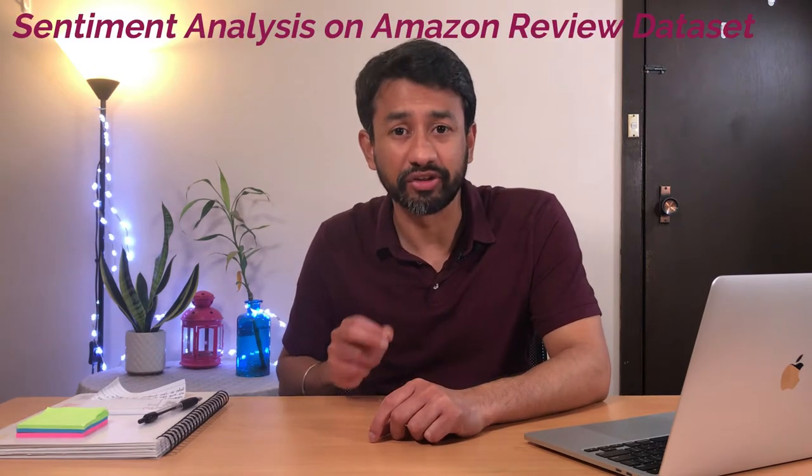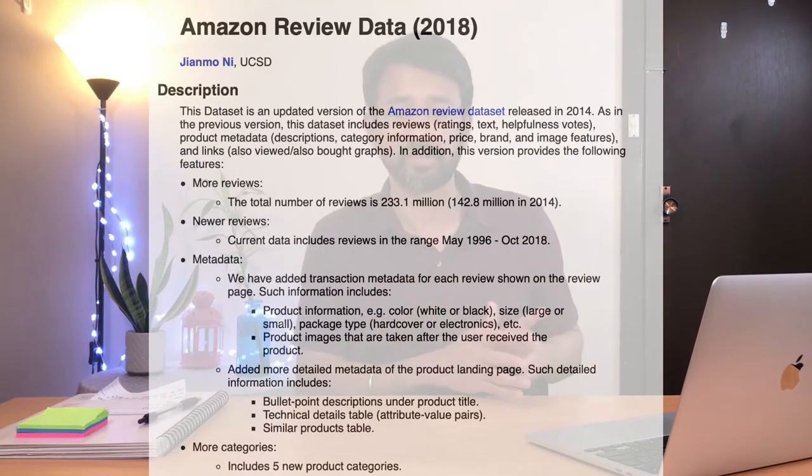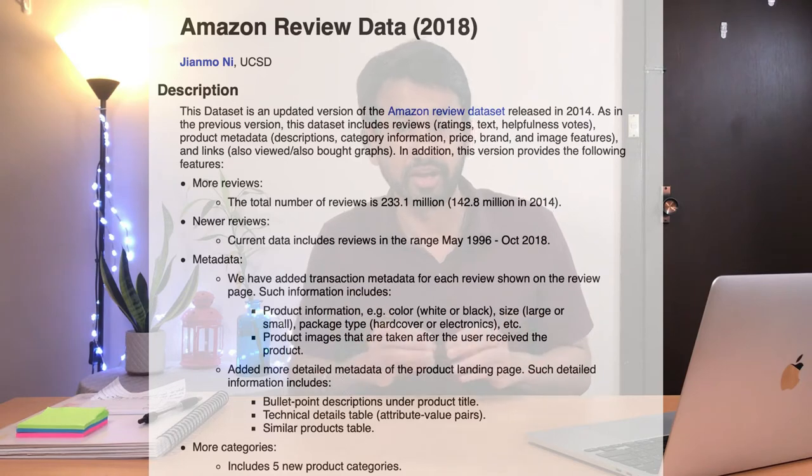The second use case is sentiment analysis on the Amazon review dataset. This is a huge dataset — the recent version published in 2018 has about 233 million reviews across products in 30 different categories. It includes details like the reviewer, the product ID, and the helpfulness rating of each review. The helpfulness rating is important to identify if a review is genuine or spam, since highly rated reviews likely contain useful information.